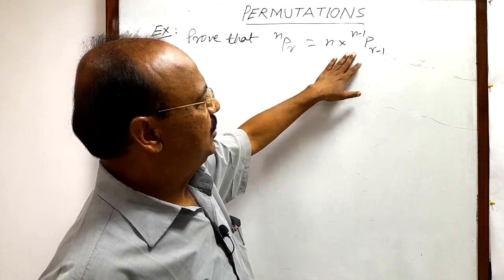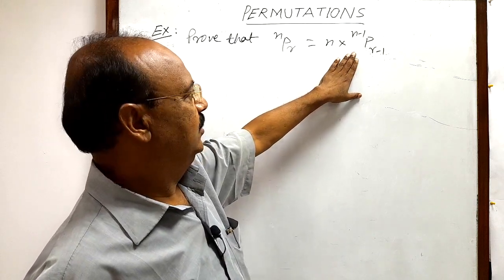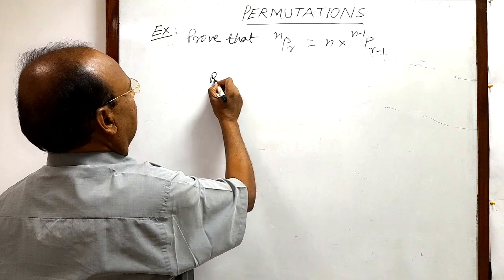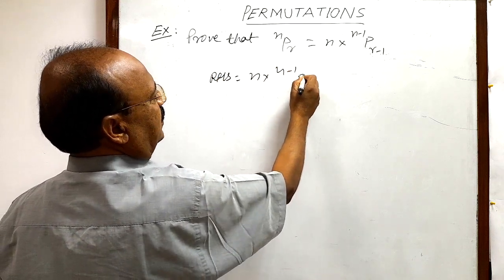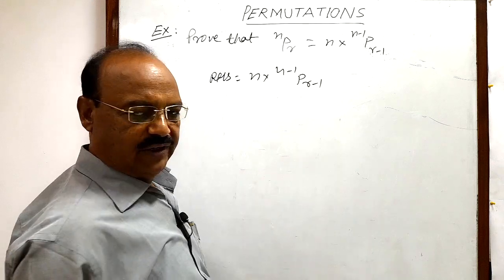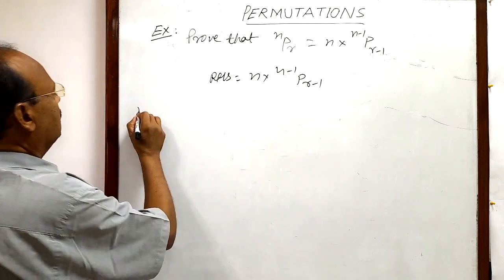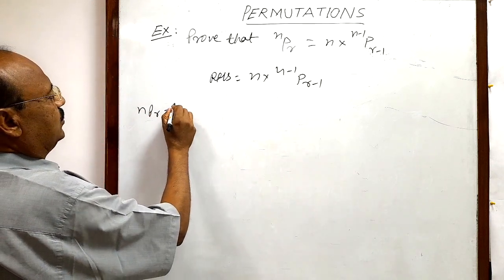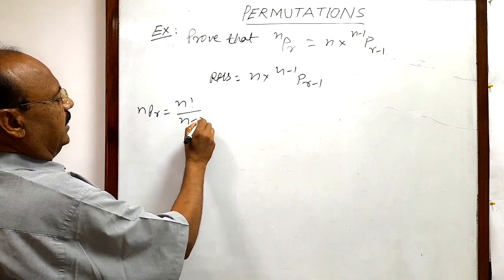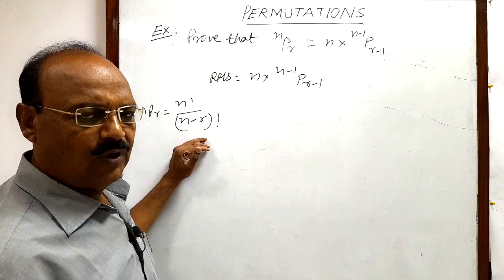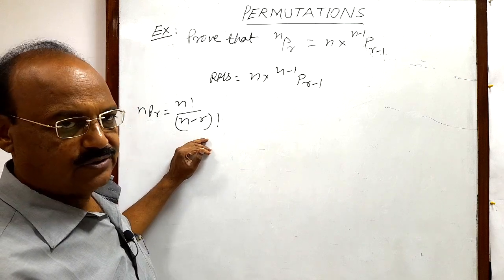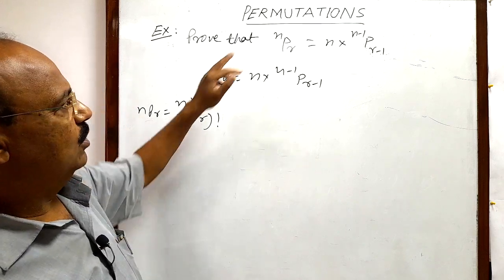It will be convenient to start from the right hand side. So here the right hand side is n into n minus 1 p r minus 1. Here we will use the formula n p r is equal to n factorial by n minus r whole factorial. We have discussed this formula several times in previous videos also, this is the formula from the topic permutations.